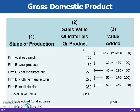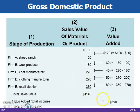Firm A creates $120 worth of wool on its sheep ranch and sells it to the wool producer. From there, the wool producer adds $60 to its value by processing the wool into cloth that can be used for clothing, and sells it to the coat manufacturer for $180. If we continue to follow the process, we will eventually reach the final good which the retail store sells for $350 to the consumer. Had we counted every step as a part of GDP, it would have added $1,140 to GDP instead of the correct value of $350.